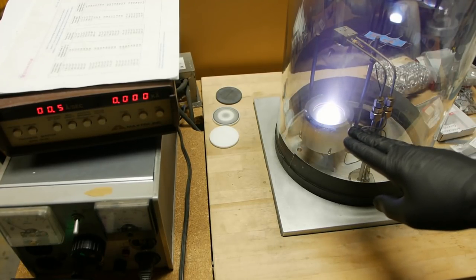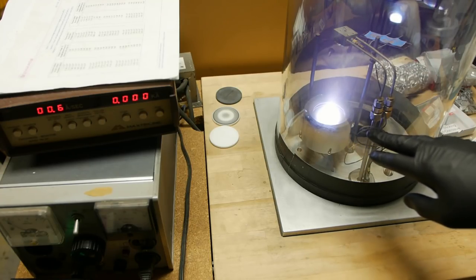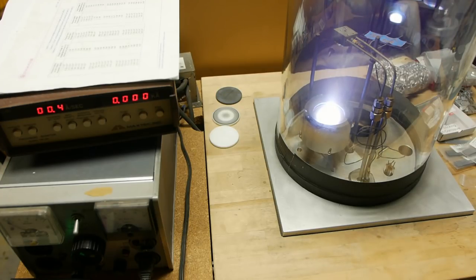And the color of the plume will change at the same time that we start getting more and more metal coming off of the surface there. So we'll let this thing run for about a minute. And you'll see the color change drastically right at the same time that we get more flow of metal coming off.